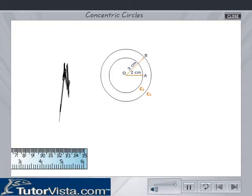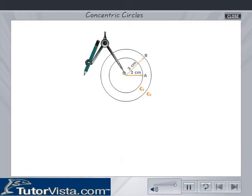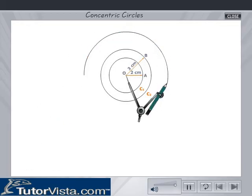With the same center O and radius equal to 5 cm, draw a third circle C3. We say that these circles C1, C2, C3 are concentric.